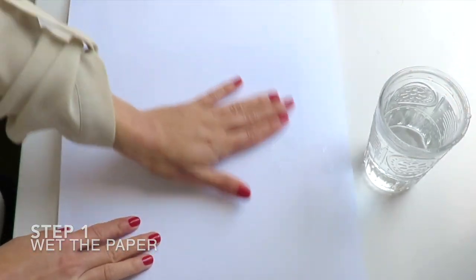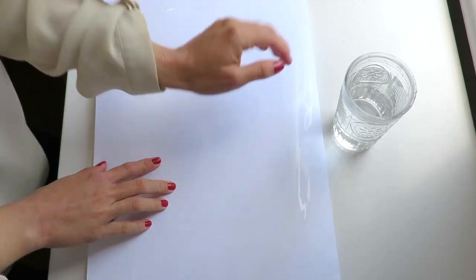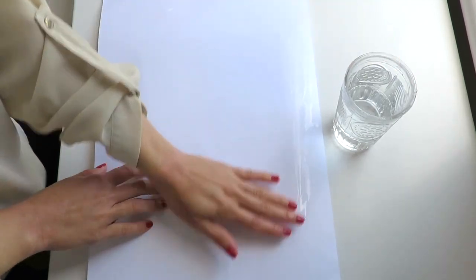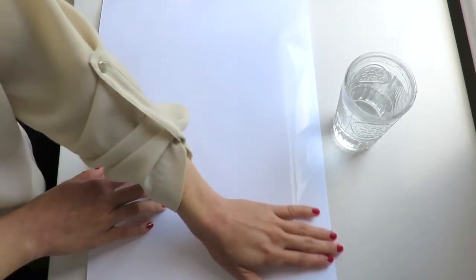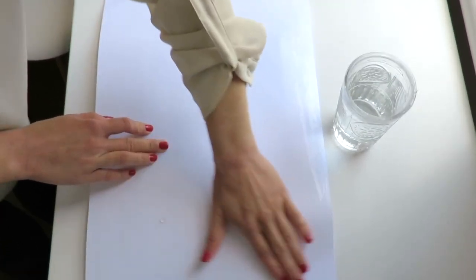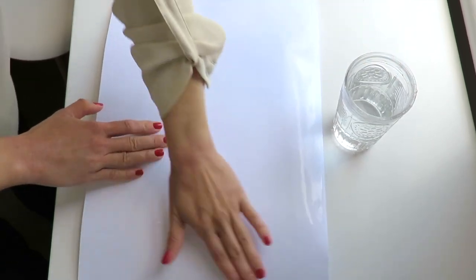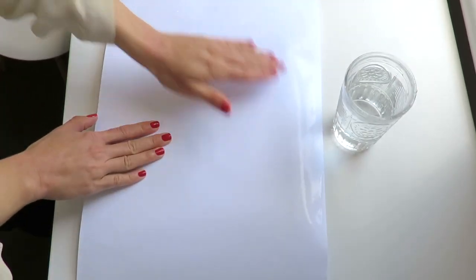Step one is to wet your paper. I simply use my hands and I apply very silky movements to smoothly distribute water across all the paper. So I aim for even level, even amount of water throughout the entire surface.